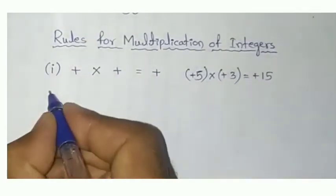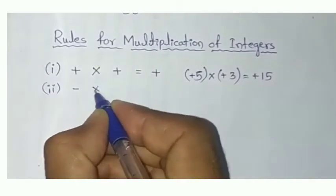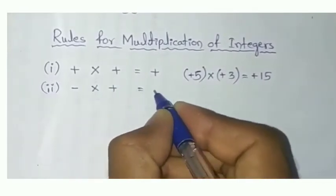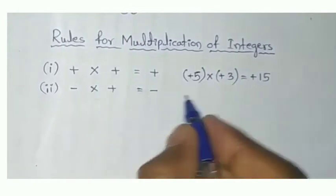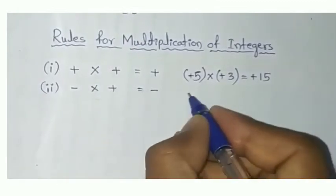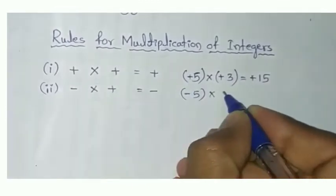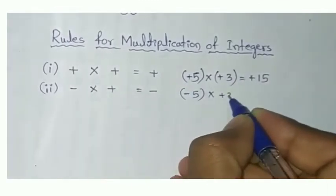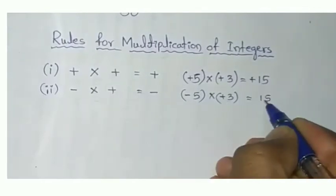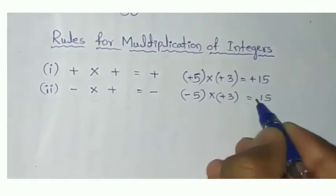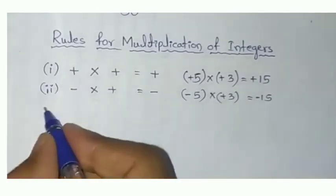Second rule: minus into plus, we will get minus. Whenever we get the opposite sign, we always get minus. Let's take one example — minus 5 into plus 3. Here, 5 into 3 is 15, but which 15? Minus into plus is minus, so we will get minus 15.